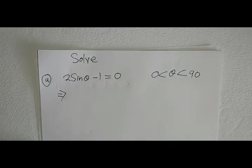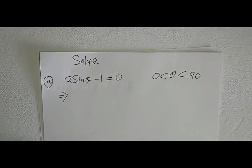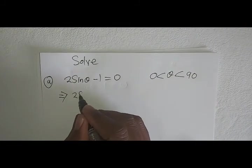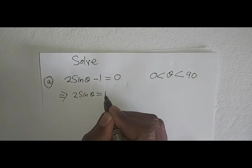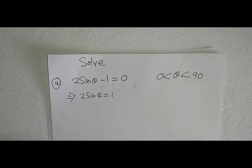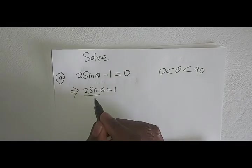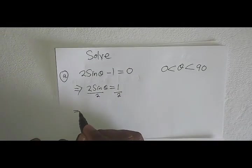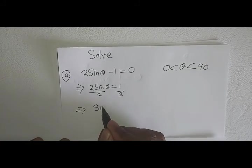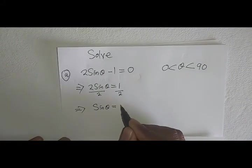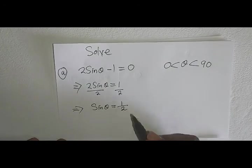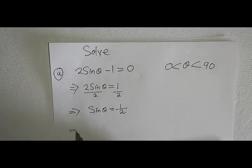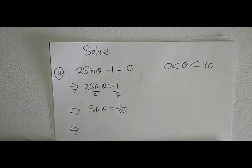This implies that 2sinθ equals 1. From there we divide both sides by 2, which means in this case we have sinθ equals 1/2.